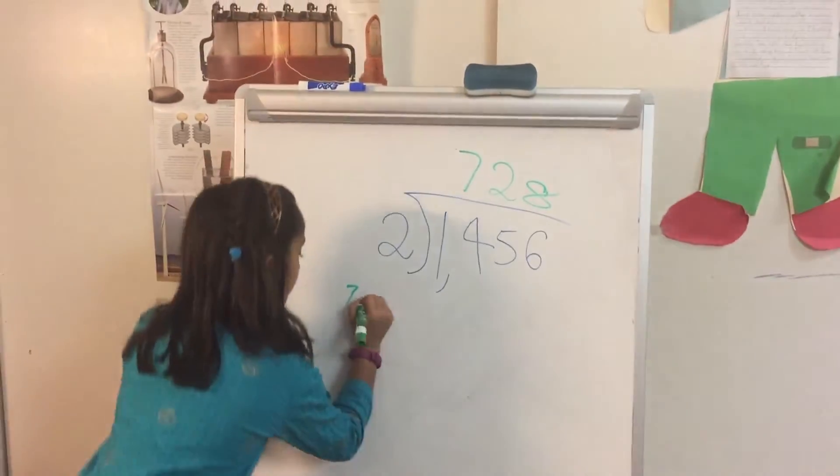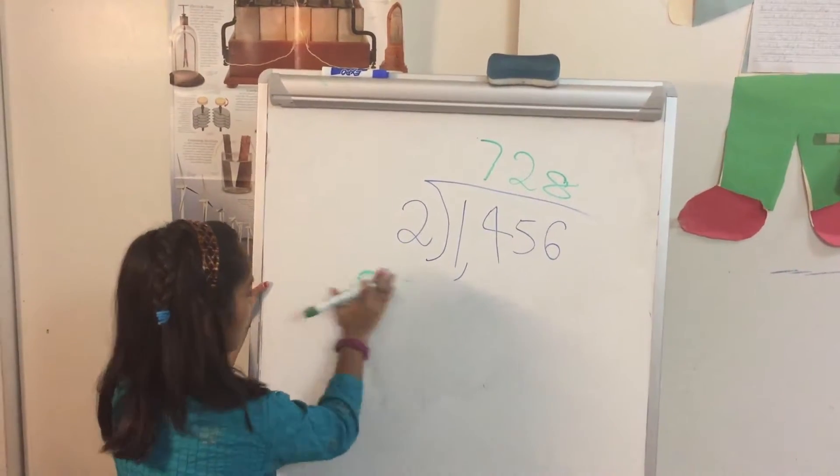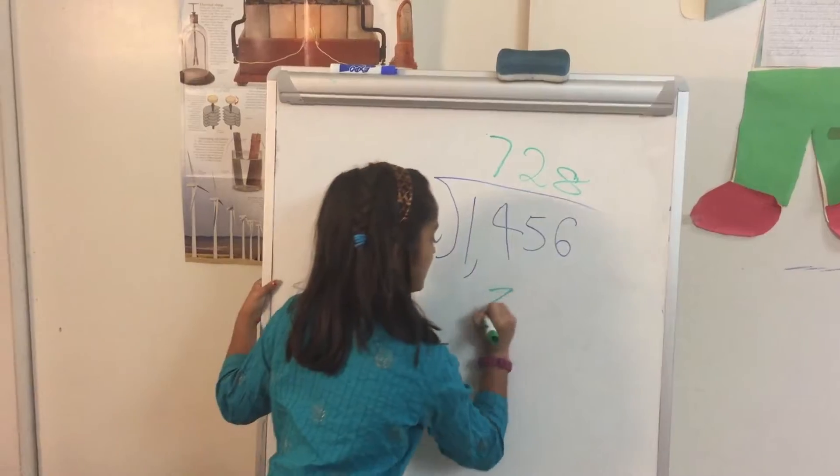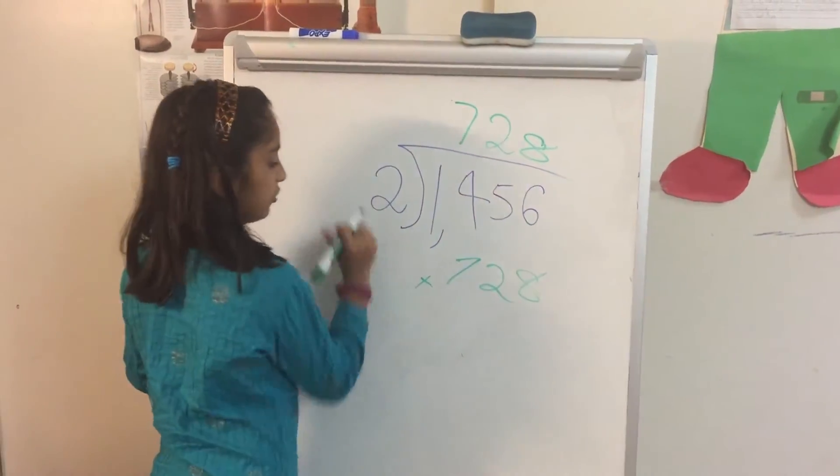Now let's check it. 728. Whoopsie, sorry, I think it's too small. Okay. 728 times your divisor, which is two.